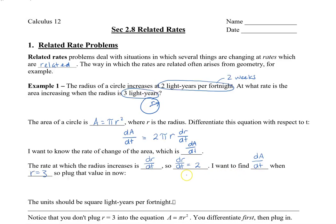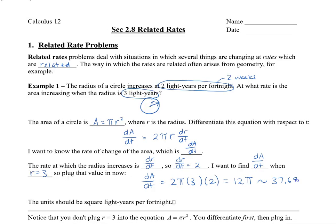We want to find dA/dt when the radius is 3. Plugging all the numbers in: dA/dt equals 2 times pi times 3 for the radius, times 2 for dR/dt. Multiplying all of this together, we get 12 times pi, which is approximately 37.699 light years squared per fortnight.